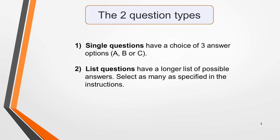In multiple choice questions, you're required to choose the correct answer from a list of options. There are two main types of question. First, there are single questions with a choice of three answers — A, B, or C. Occasionally there may be four options. Second, there are list questions. These have a longer list of possible answers, and you must select more than one, as specified in the instructions.